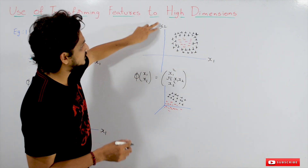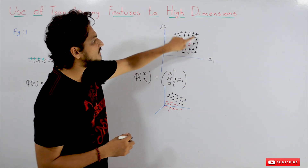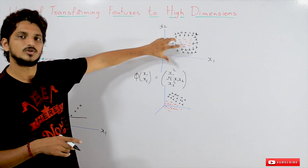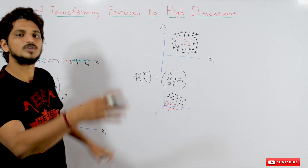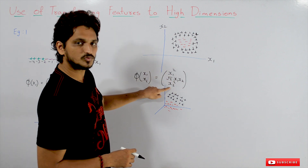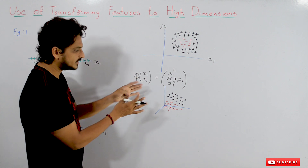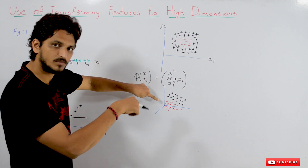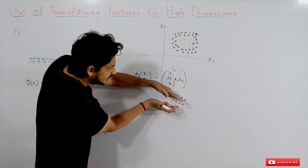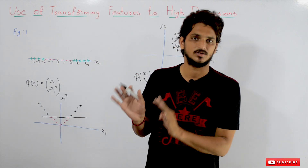Let's take one more example. The dataset has x1 and x2 — a two-dimensional coordinate system which we already discussed during logistic regression. This is not a linearly separable dataset, so we cannot apply support vector machine or logistic regression directly. We transform it into a three-dimensional coordinate system using the function phi(x1, x2) = [x1², √2·x1·x2, x2²]. After converting the data into three dimensions and plotting it, applying support vector machine or logistic regression will identify a plane that separates the positive and negative classes.